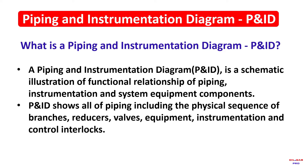P&ID shows all of piping including the physical sequence of branches, reducers, valves, equipment instrumentation, and control interlocks.